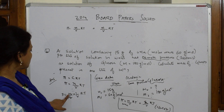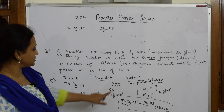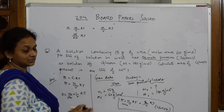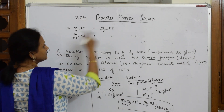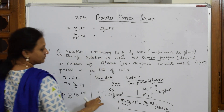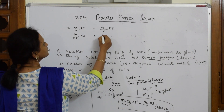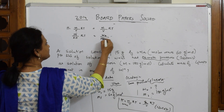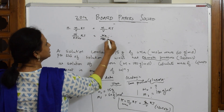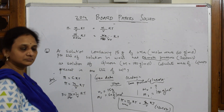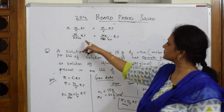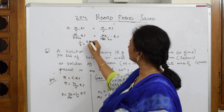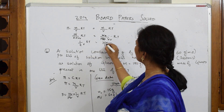So what is n? n = weight / molecular weight. The weight given for urea is 15, so: 15/60 × (1/V) × RT = w₂/180 × (1/V) × RT. I'm not bothered about RT here because I only have to find the weight. Solving: 15/60 = 1/4, so 1/4 × VRT = w₂/180 × VRT.